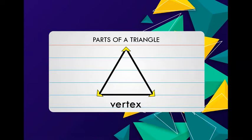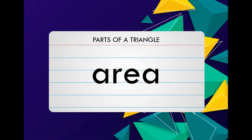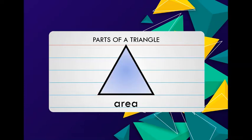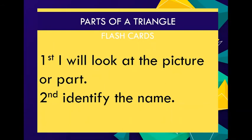Vertex. Area. Now switching to the second mode: first I will look at the picture or part, second identify the name.